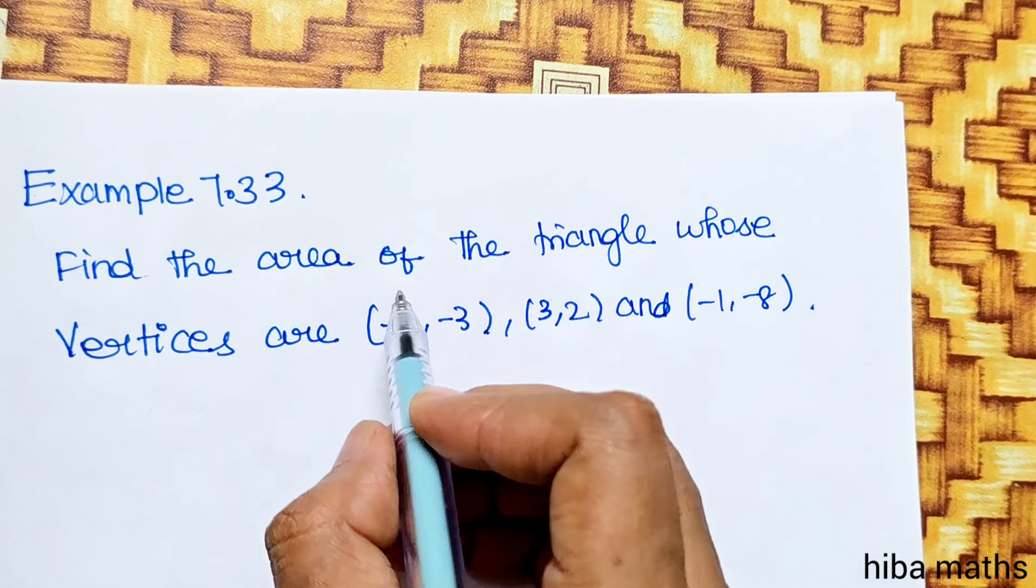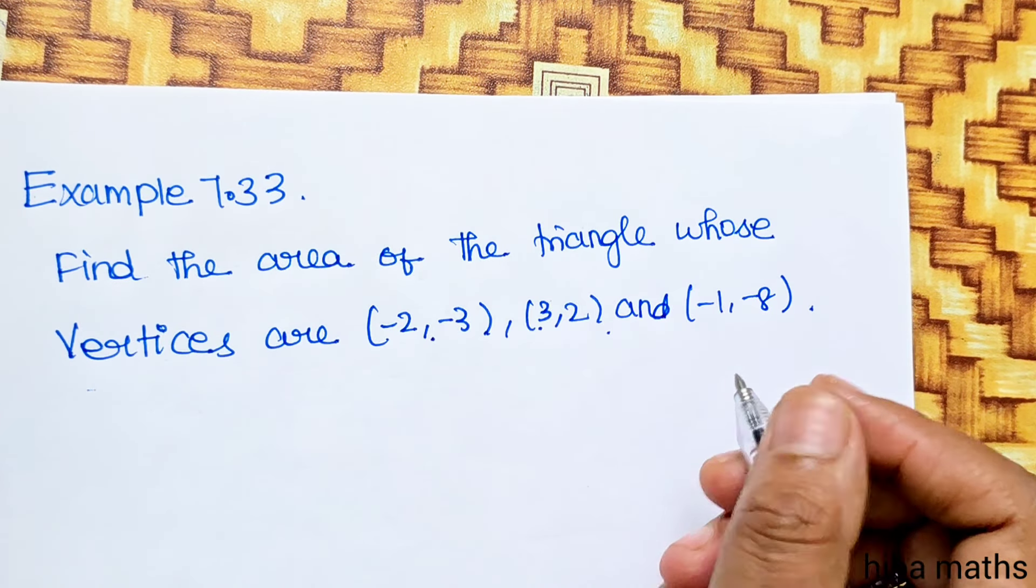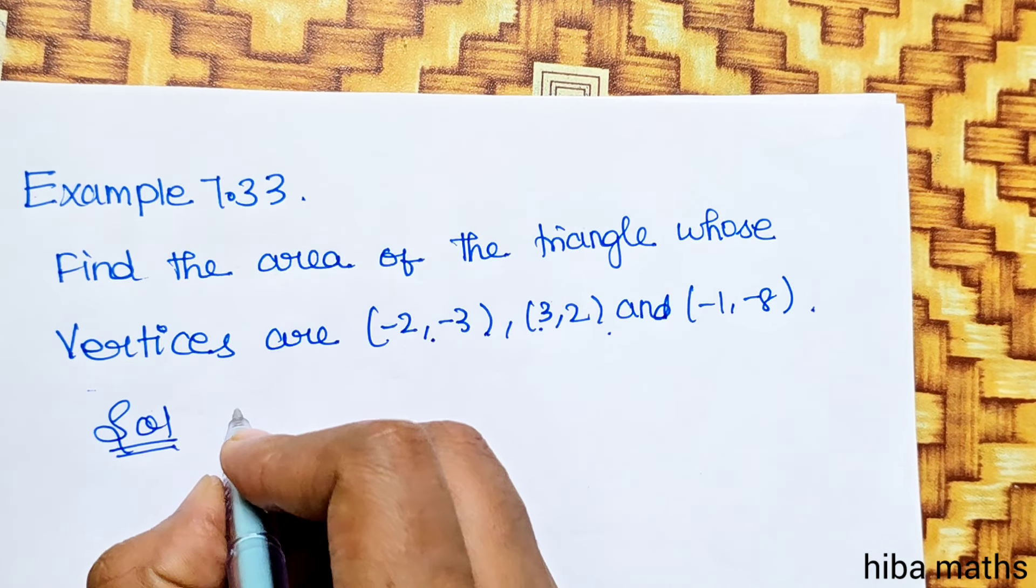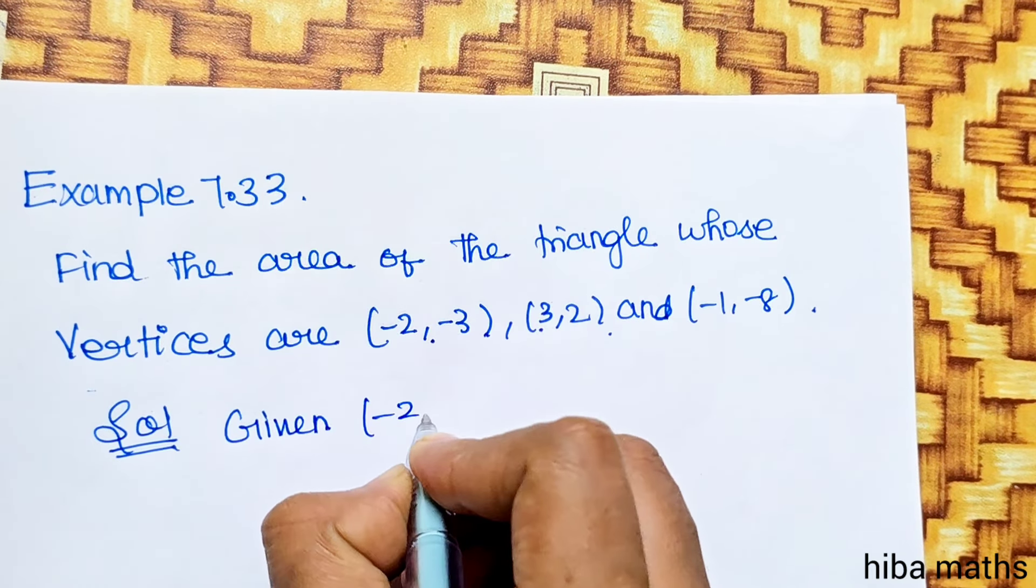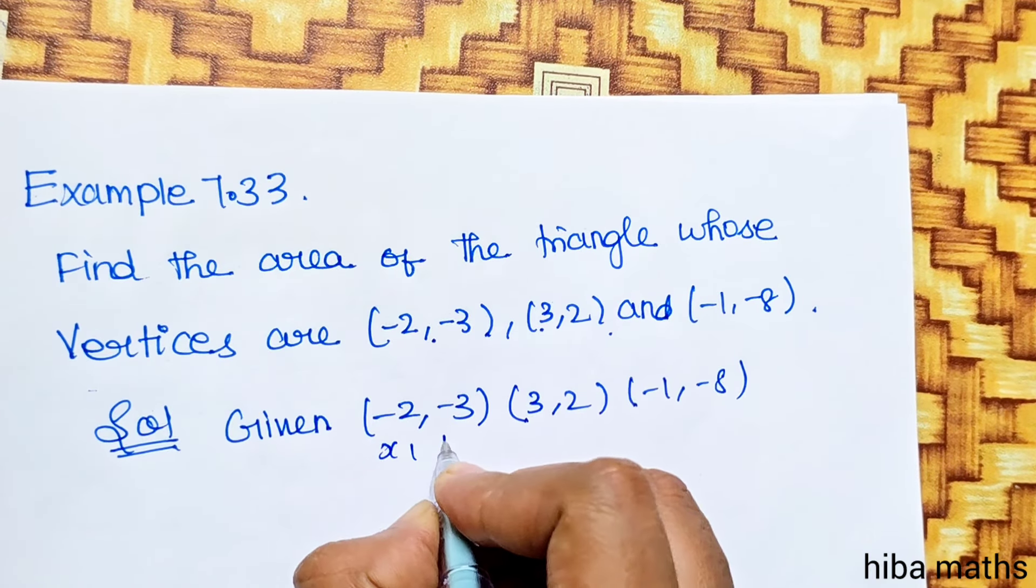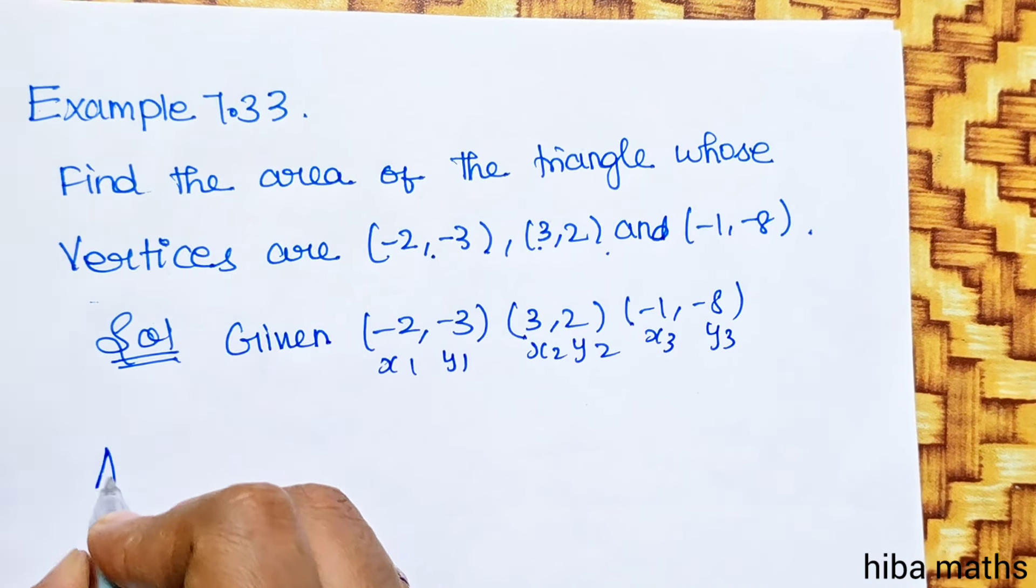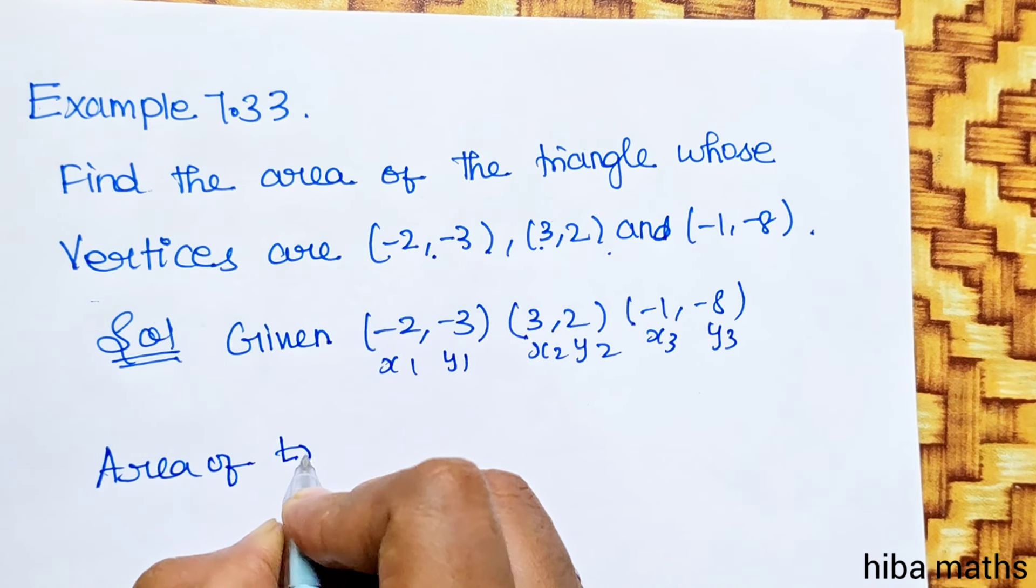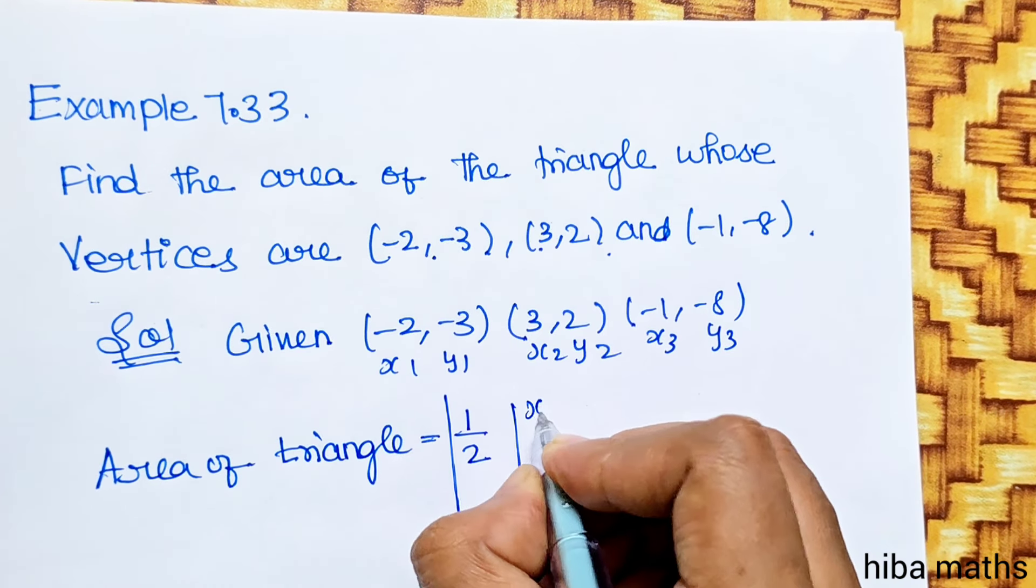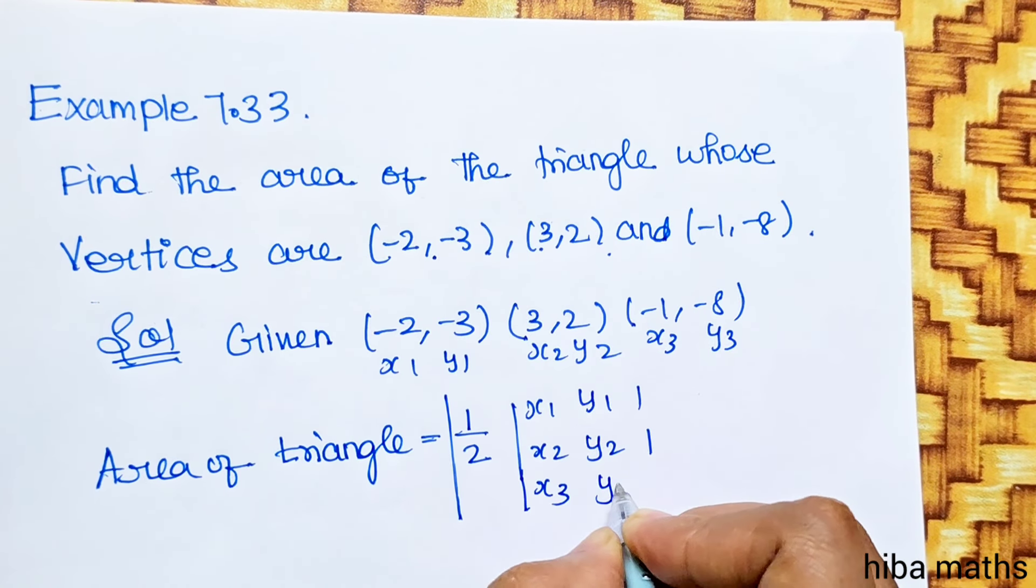Example 7.33: Find the area of the triangle whose vertices are (-2,-3), (3,2), and (-1,-8). The triangle has 3 points. Area of triangle equals half times x1 y1 1, x2 y2 1, x3 y3 1.